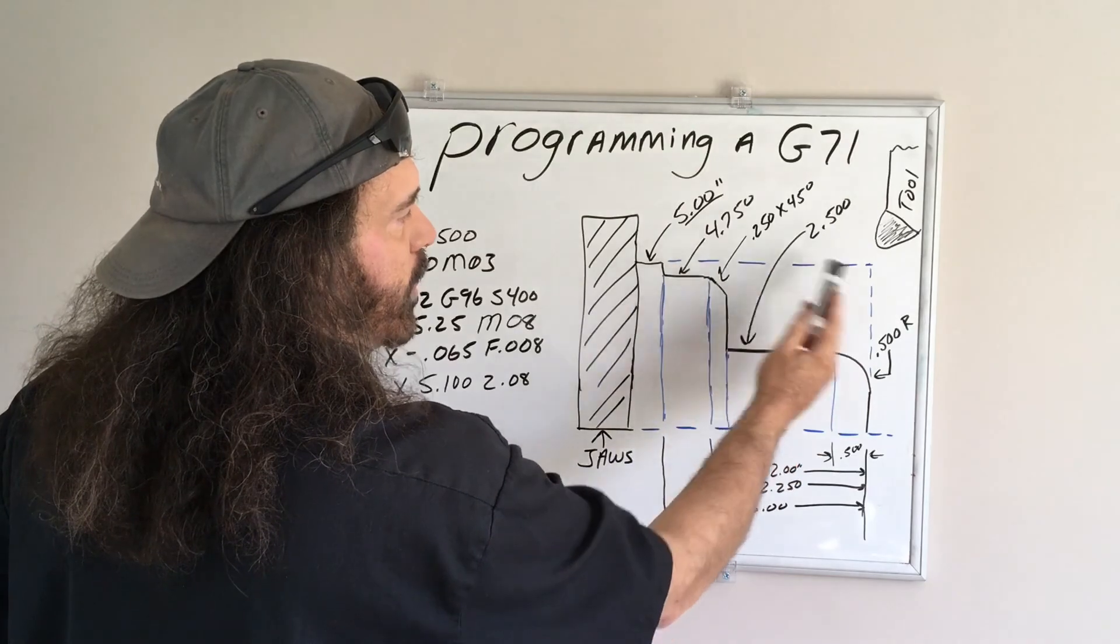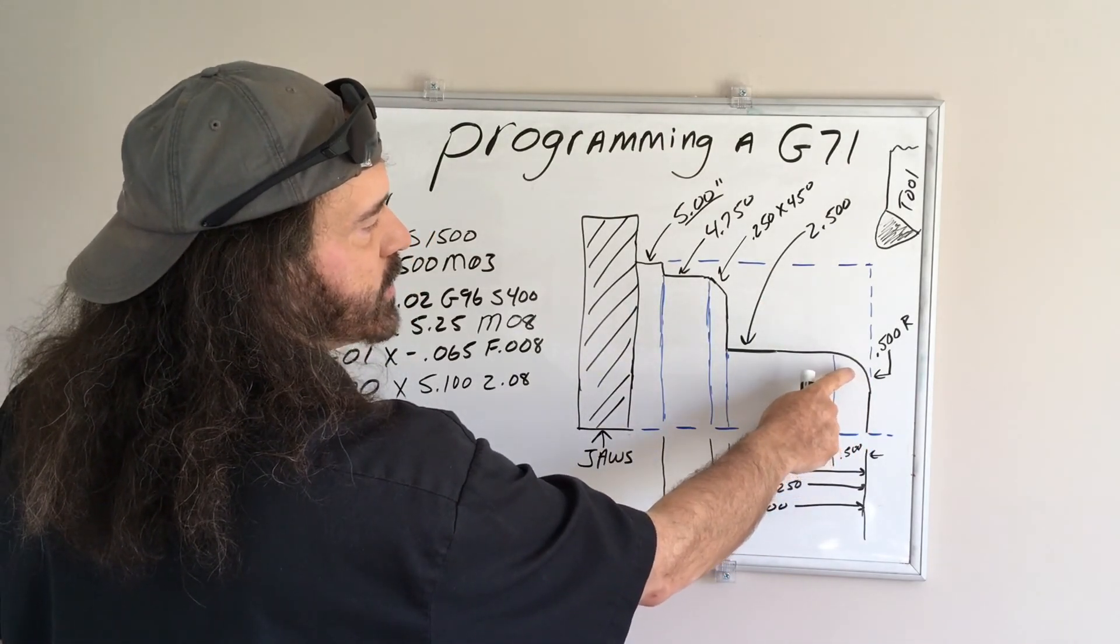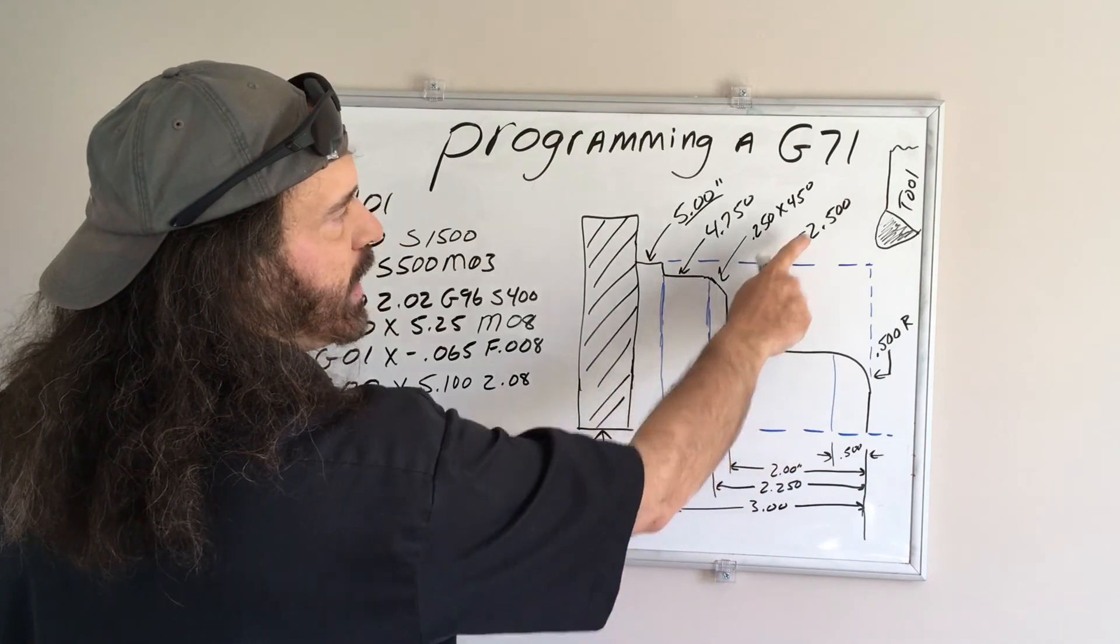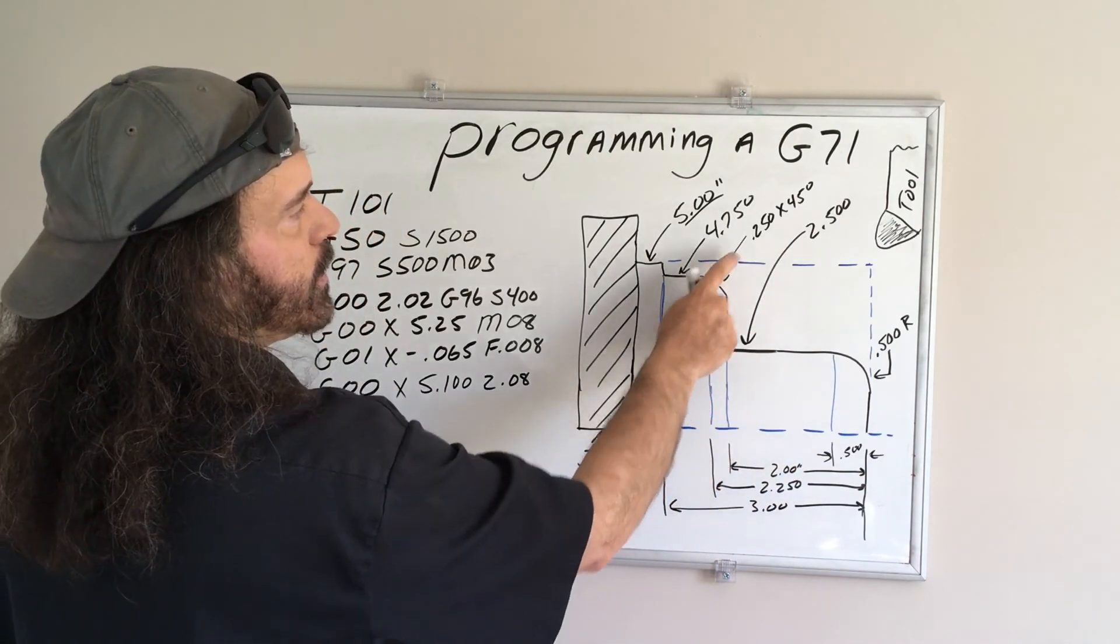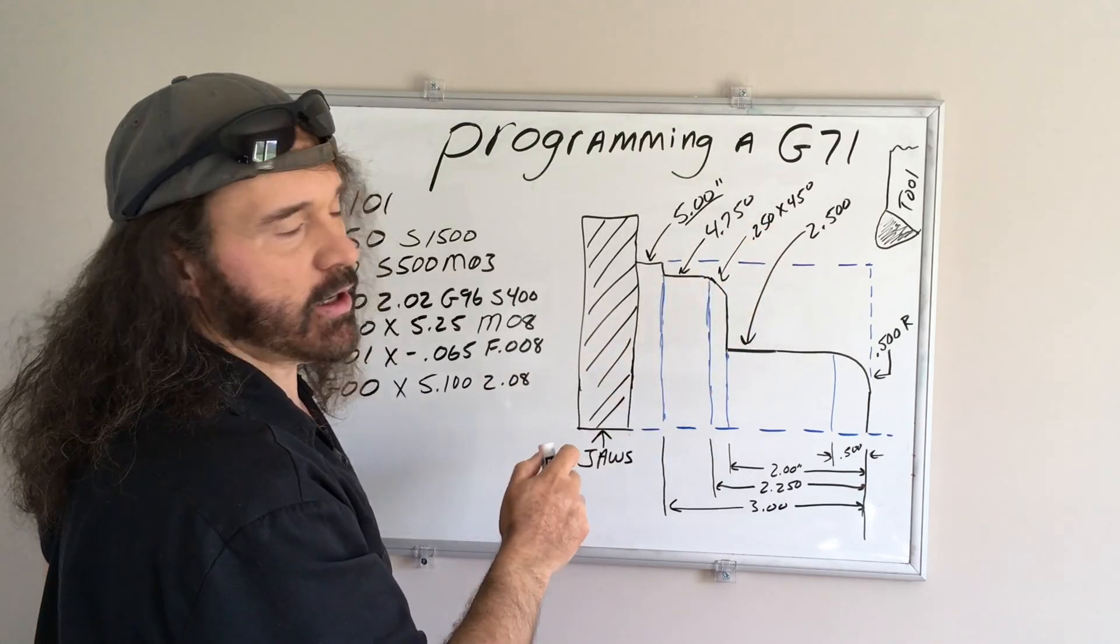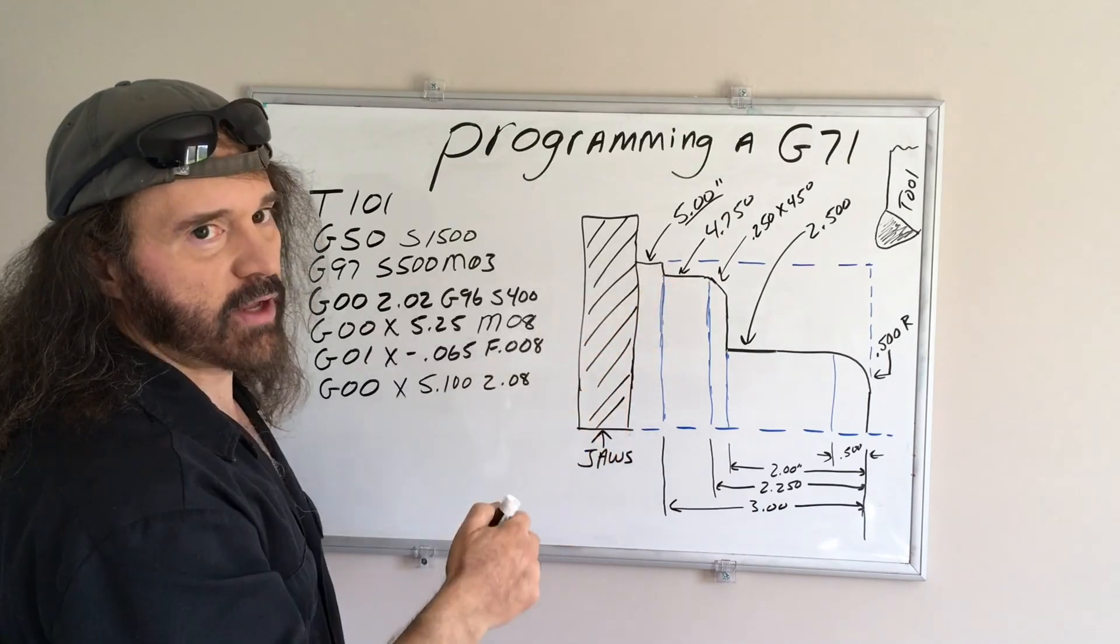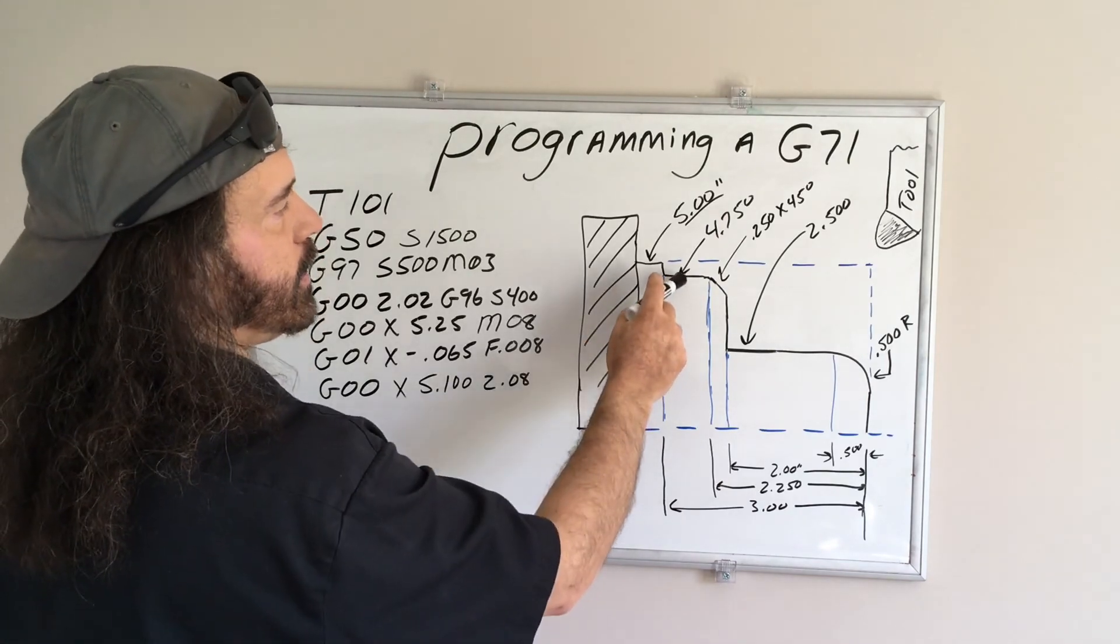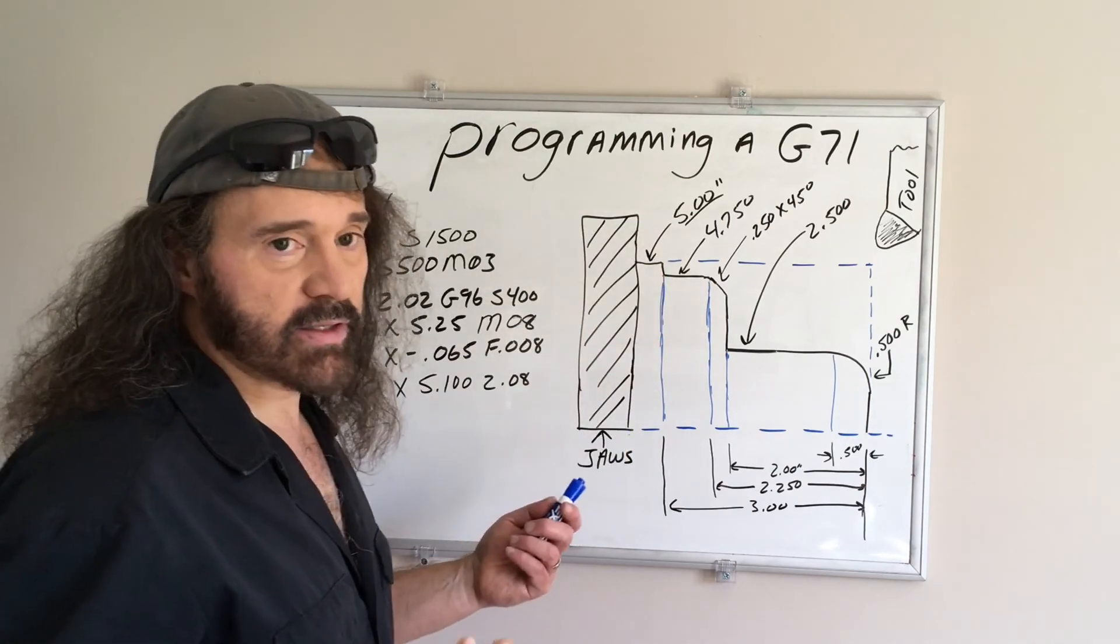We want to remove all this material, so we're going to do a half inch radius here, we're going to do a two and a half inch diameter here, we're going to do a quarter inch by 45 degree cut, then we're going to go up to a 4.75 diameter, and then we're going to come off the part, and that's it.